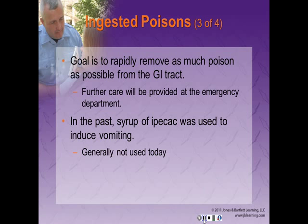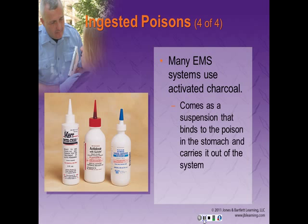In the past, EMS used syrup of Ipecac to induce vomiting, but we generally do not use it today because of the danger of aspiration if the patient has a decreased level of consciousness. Many EMS systems still use activated charcoal — it binds to the poison in the stomach and carries it out without it being absorbed into the bloodstream. It is more effective and safer than syrup of Ipecac. Always immediately assess airway, breathing, and circulation of every patient who has experienced a poisoning event.